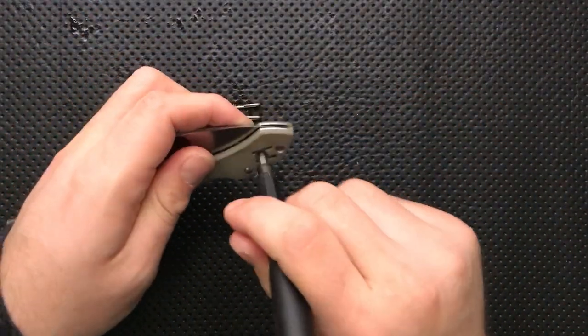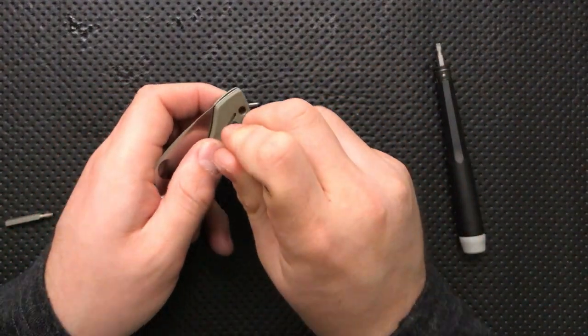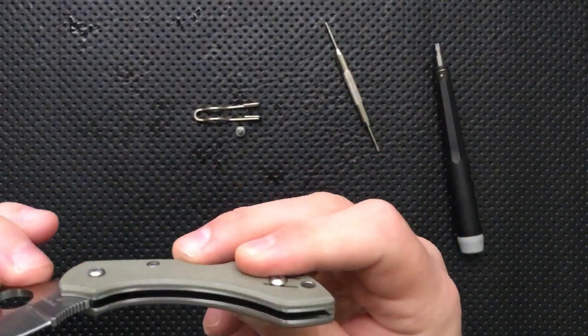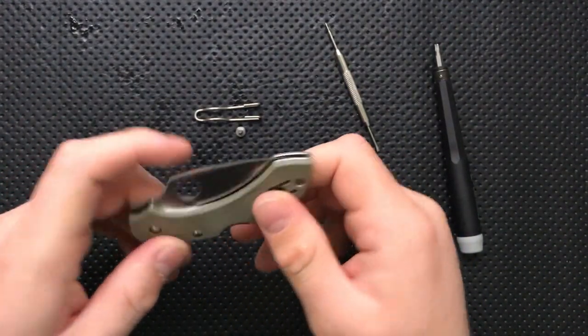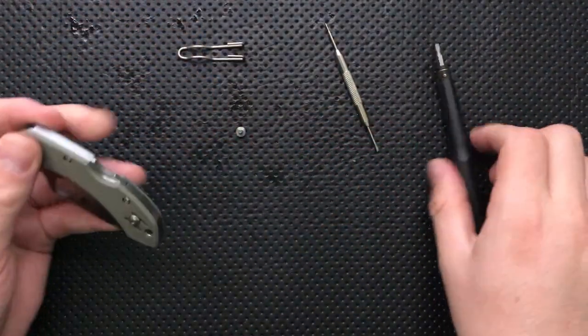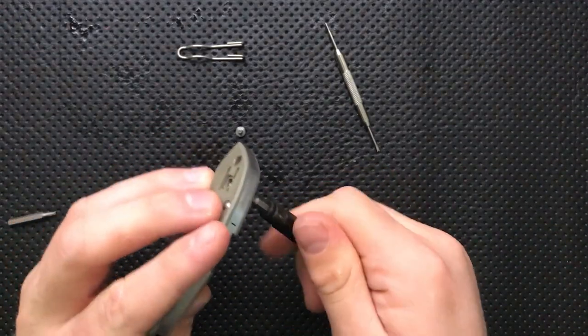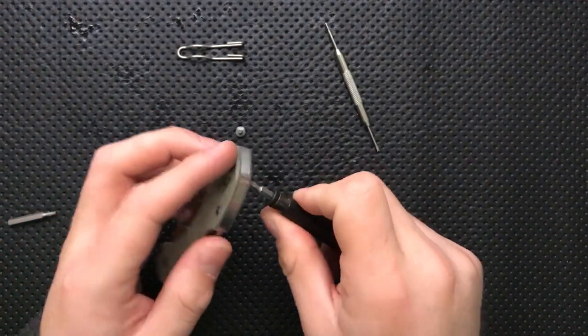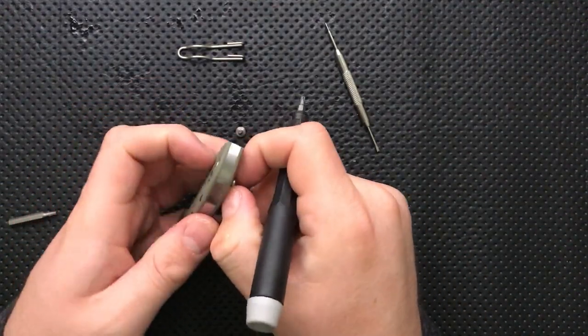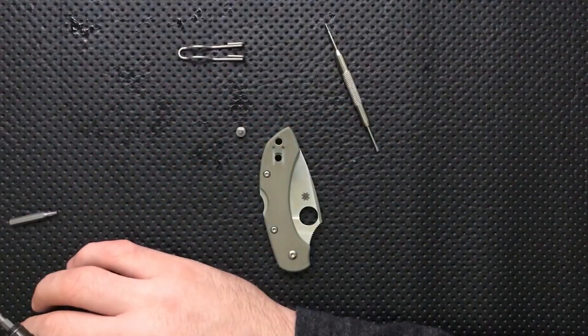Pop that out of there. And I'm just gonna use a little oiler tool here that's actually a spring bar tool for a watch, but I'm gonna try and push that out, but I'm not gonna try too hard. Looks like it's stuck in there. Whoa there, got a flying pivot here. Just a second.